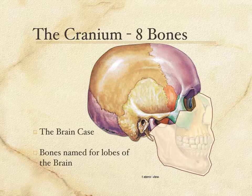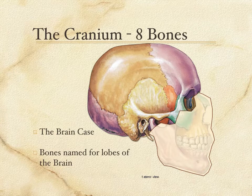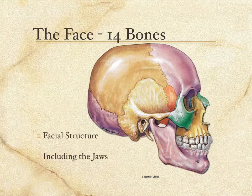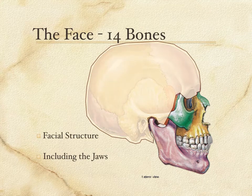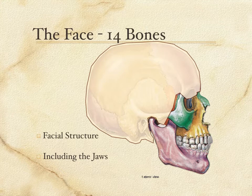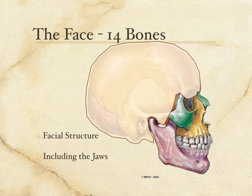The cranium has eight bones. If we take the facial features out, as seen in this diagram, the bones remaining are the bones of the cranium — eight bones there. There are 14 bones in the facial structure. The majority of the bones in the facial area are paired, meaning there is a right one and a left one sutured together to form the structure of the face, and these bones include the two jaws.